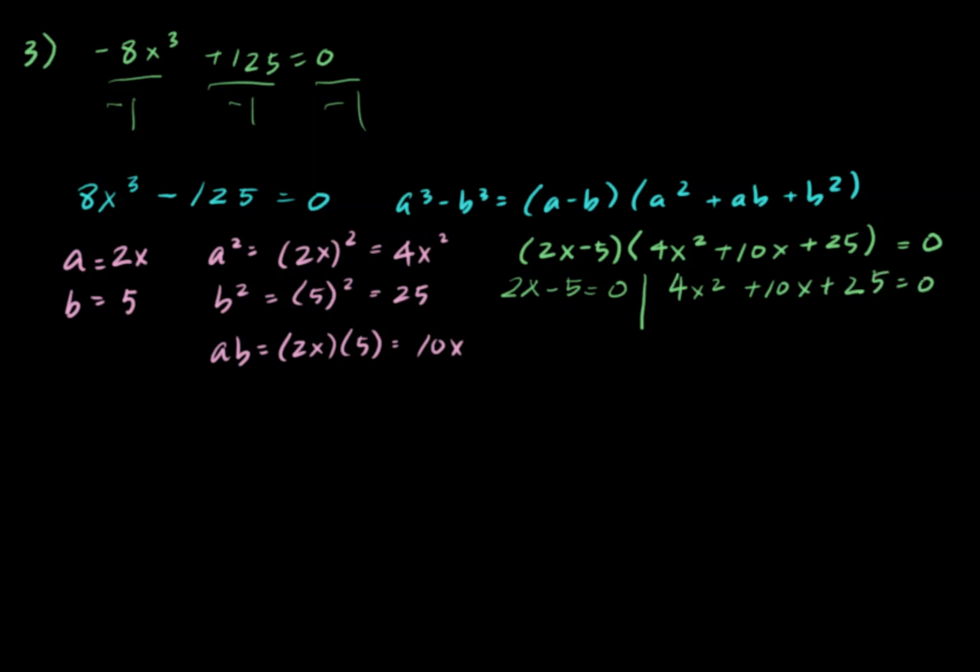I can solve the left side. So, x equals 5 halves. And this side, let's go ahead and use a discriminant here, B squared minus 4ac, to determine what we have to do.